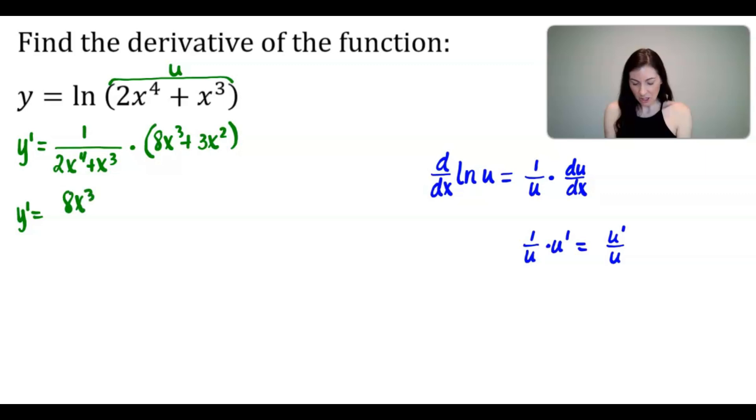I would write the 8x cubed plus 3x squared in the numerator, since it's that times 1, and then divided by the denominator, 2x to the 4th plus x cubed. And I'm pretty sure that there's just a whole lot of x's going on here, so I think there is some simplifying I can do.